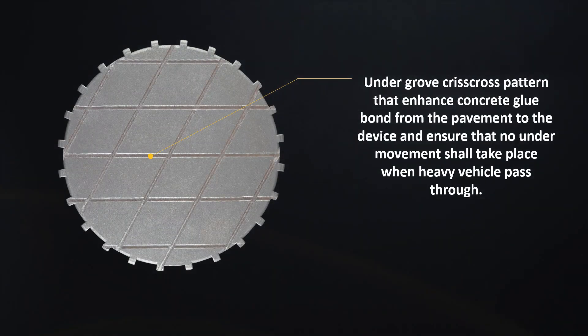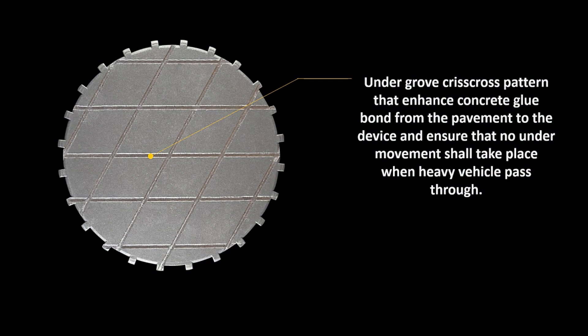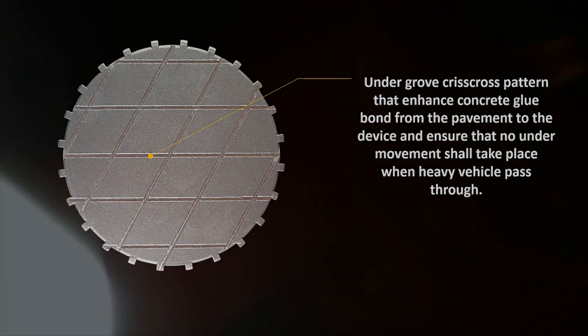An undergrowth criss-cross pattern enhances concrete glue bond from the pavement to the device and ensures that no under-movement shall take place when heavy vehicles pass through.